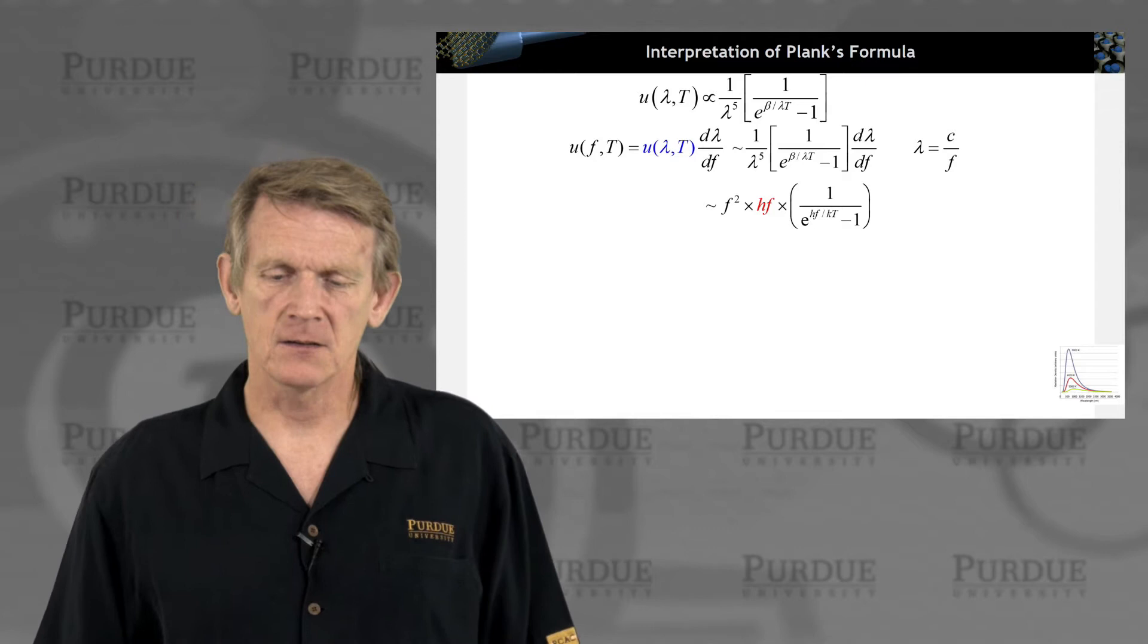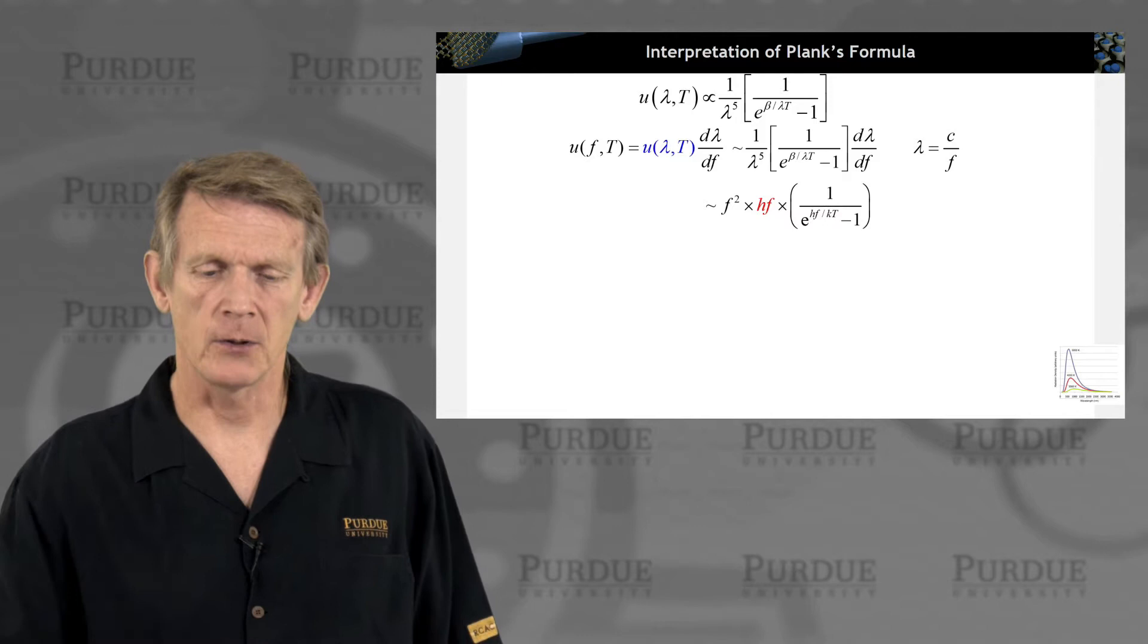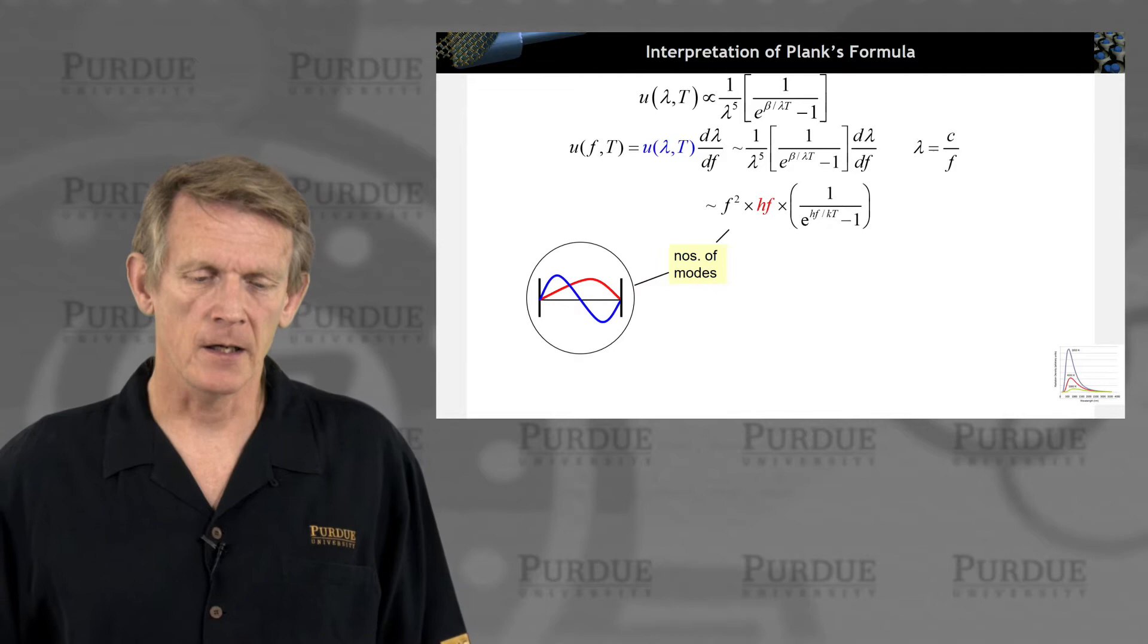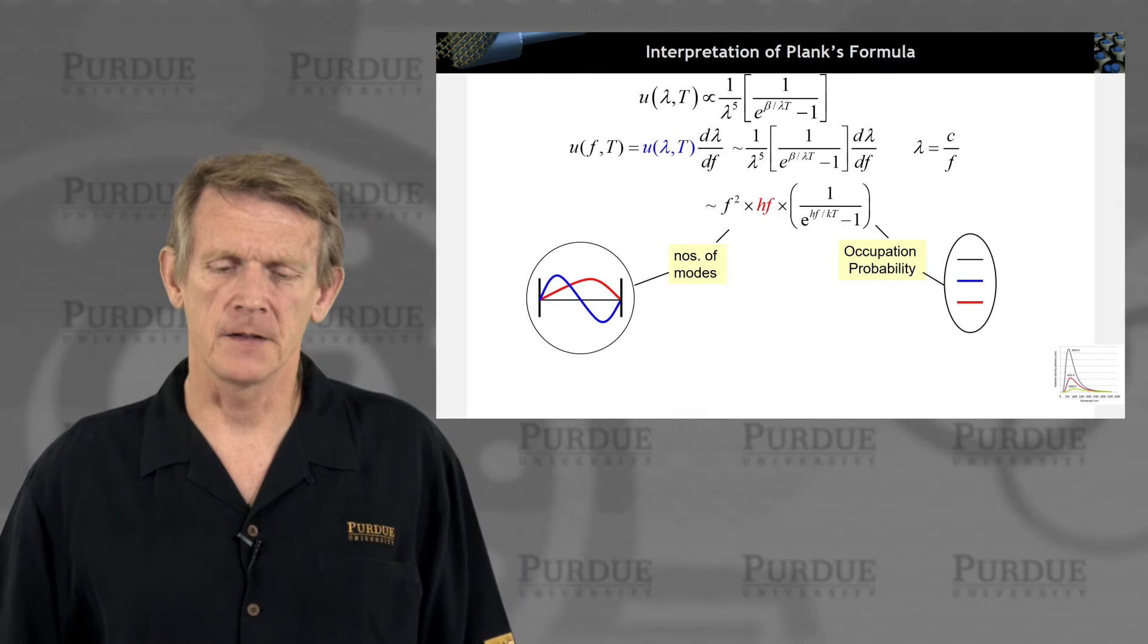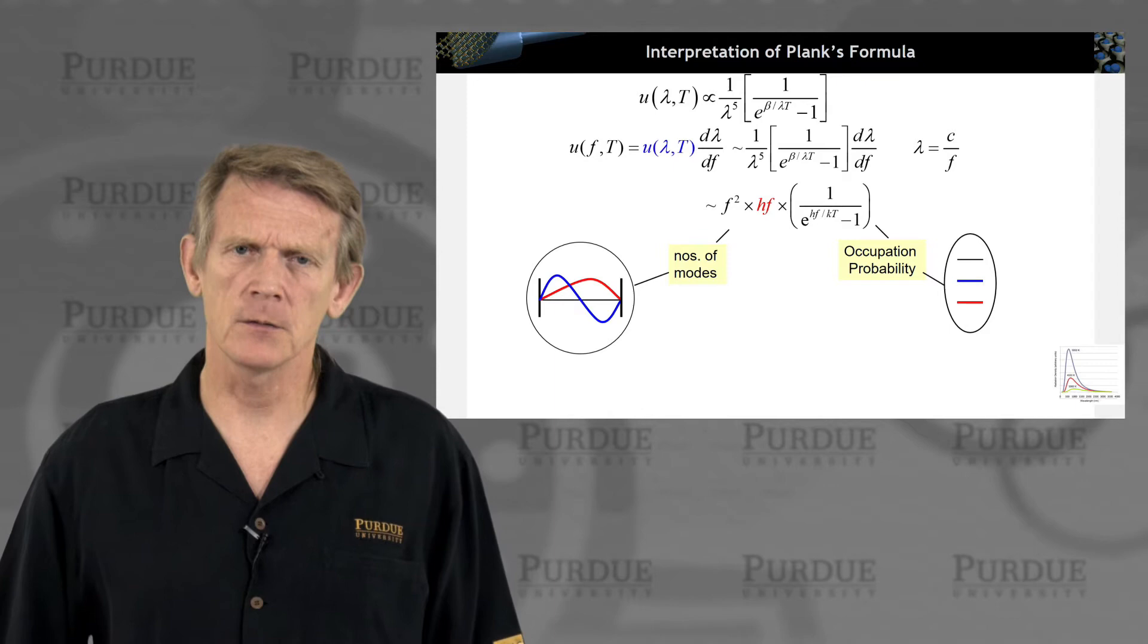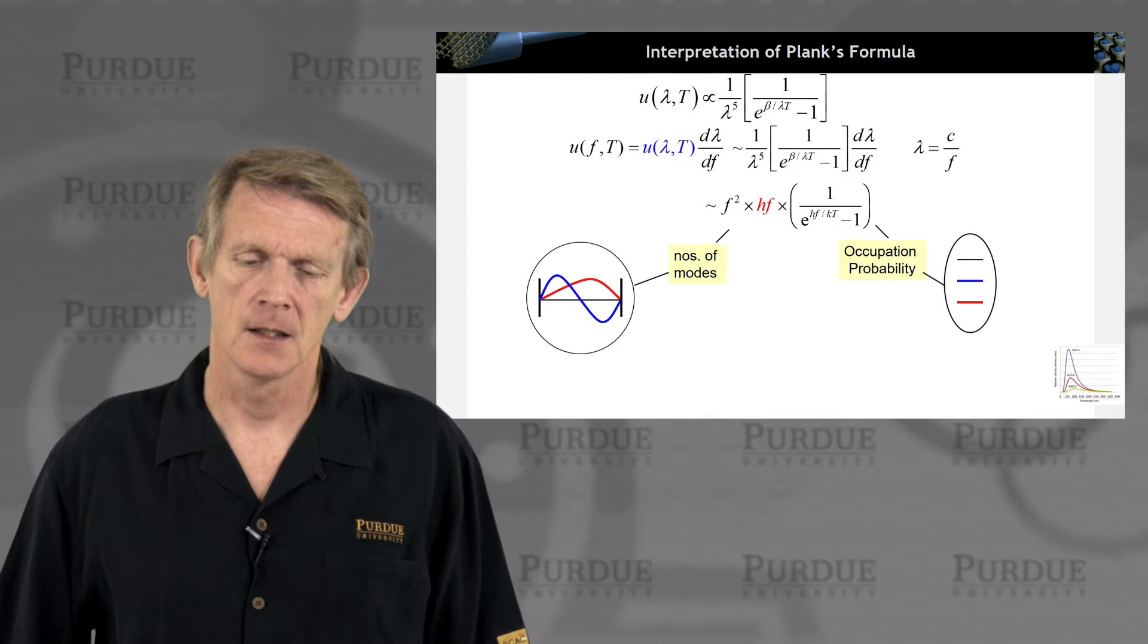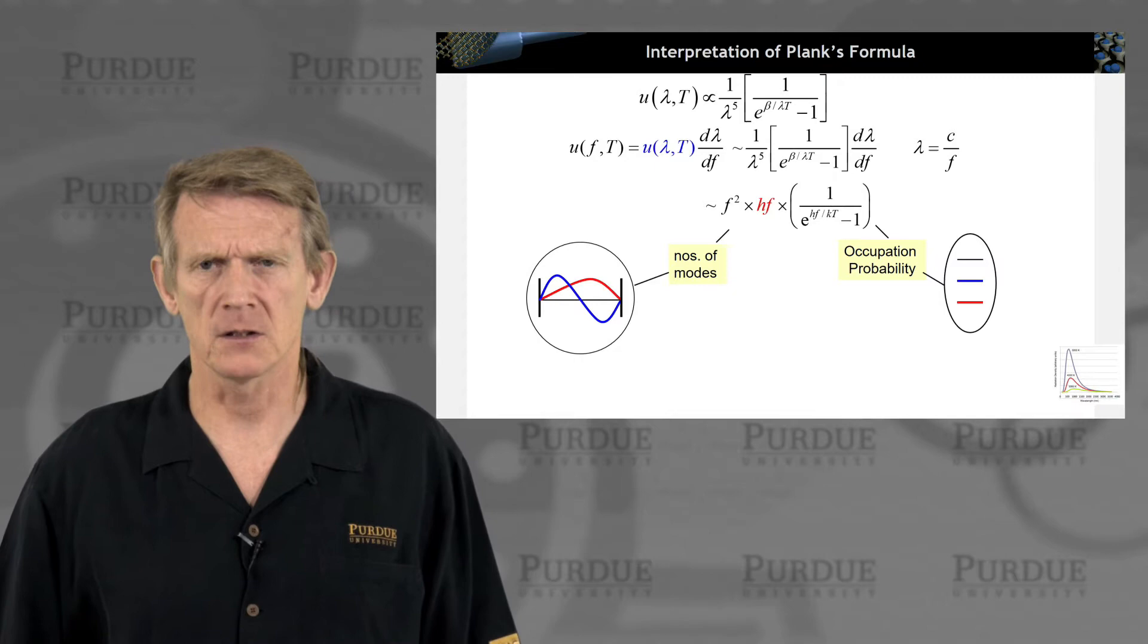So as you dissect this expression, you have three components that are multiplied with each other. You can interpret f squared as the number of modes that are in this black body. You can have an occupancy of these modes. How many of them are activated? So you have the concept of number of modes that are available in the system, the resonator. How many resonances can this resonator contain? And which ones are occupied or utilized?